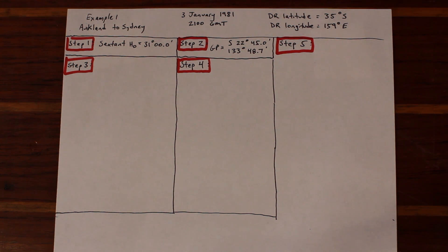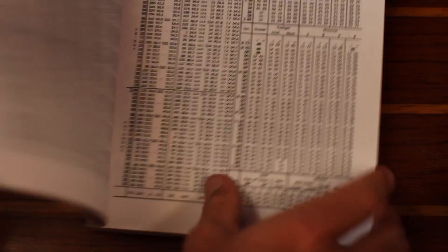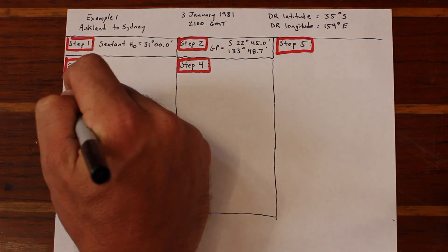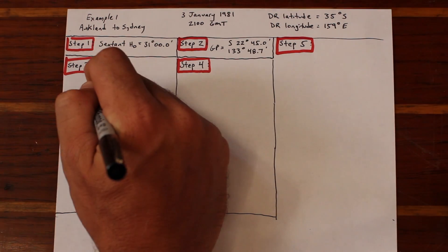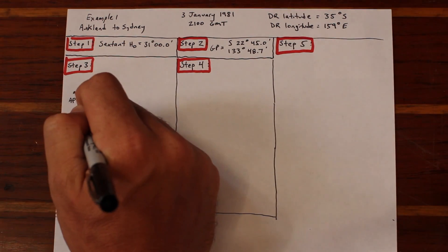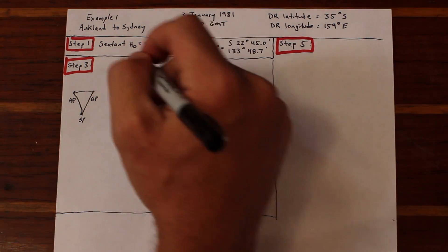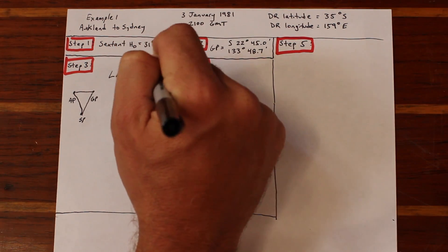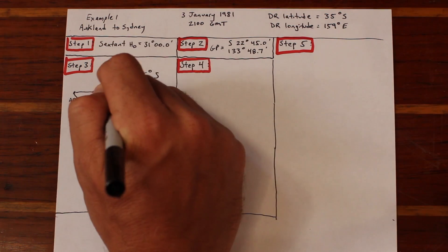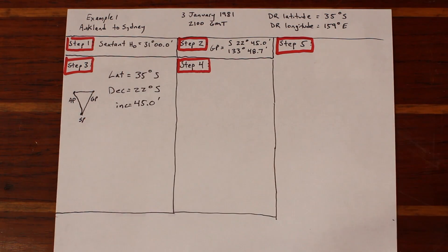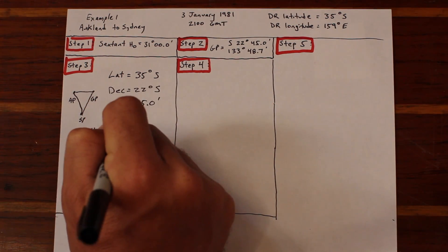It's January and we're bound for Sydney. Our DR position is as indicated and I've solved steps one and two for you. In step three, our triangle looks a little different this time. But fear not, think it through and you'll be fine. In this case, the sun is to our east since it's local morning time and we're also using the south pole. But we still need the same information to make HO 229 work. Our latitude will be 35 degrees south, which is the nearest whole latitude.